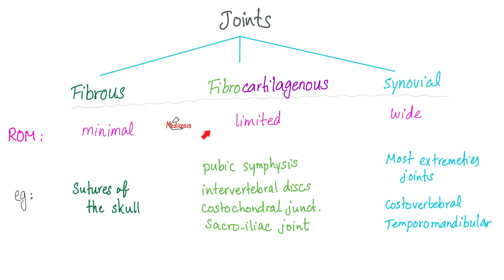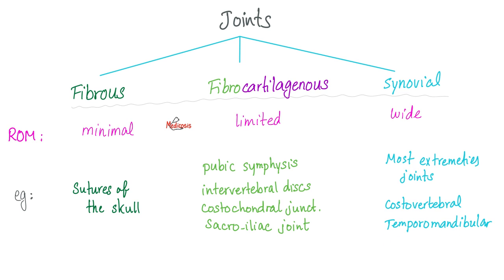Medicine makes so much sense once you understand what you're talking about. Patients with rheumatoid arthritis can suffer from knee problems, wrist problems, shoulder problems, costovertebral problems, and TMJ problems — because all those joints are synovial.